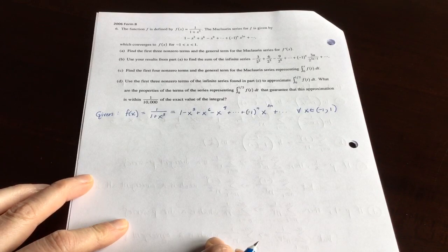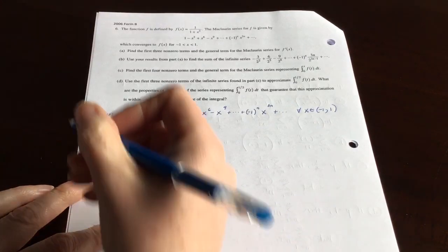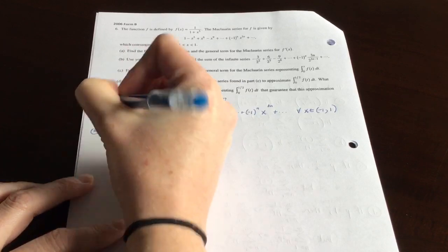And they're saying that this equal sign only holds true if your x values are between negative 1 and 1. So now that you've taken just a beat to comprehend what the given information is, now let's move on to part A.